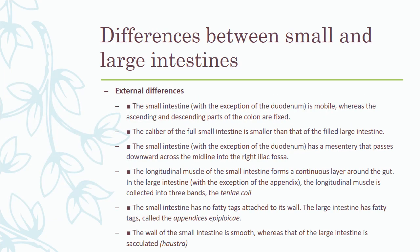There are a few differences between the small and large intestine — some external and some internal. Externally, the small intestine is relatively mobile (with the exception of the duodenum), whereas the ascending and descending parts of the colon are fixed. The large intestine has a wider caliber. The small intestine has a mesentery passing downward across the midline into the right iliac fossa. The longitudinal muscle coat of the small intestine forms a continuous layer, whereas in the large intestine it forms three thickened bands — the teniae coli. The small intestine has no fatty tags or omental appendices, and its wall is smooth whereas that of the large intestine is sacculated and has haustra.